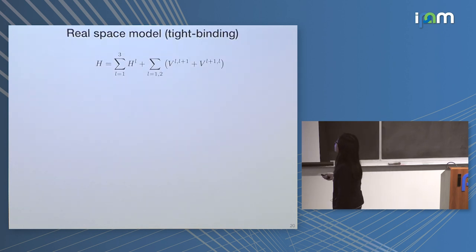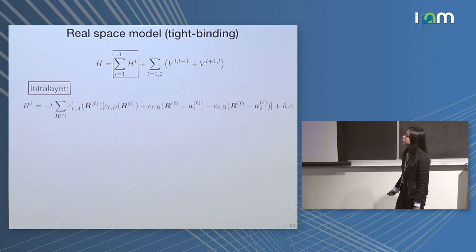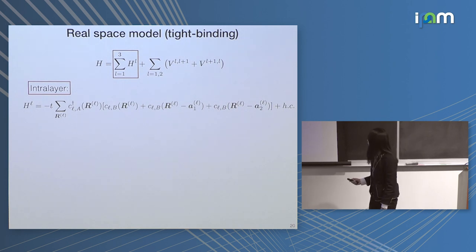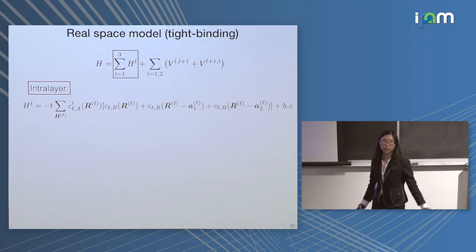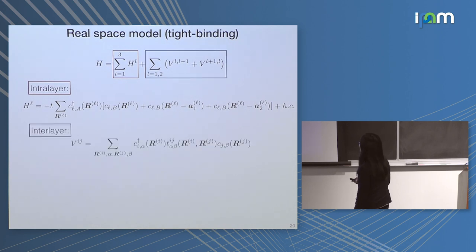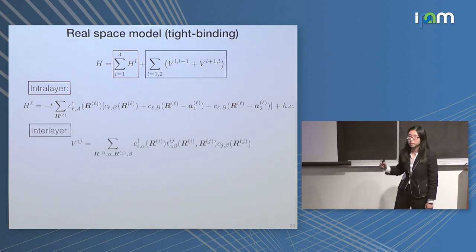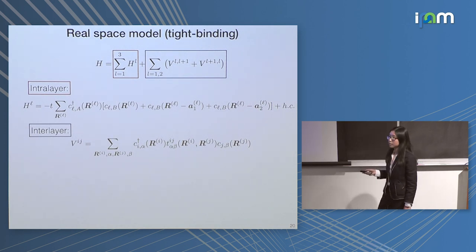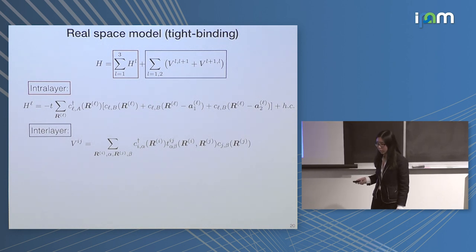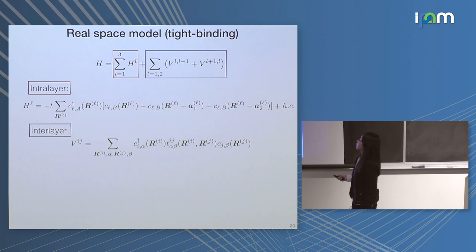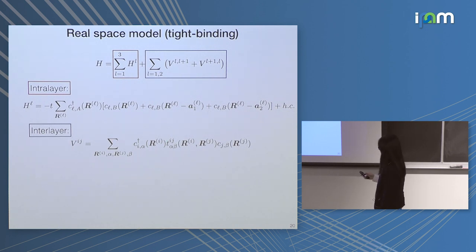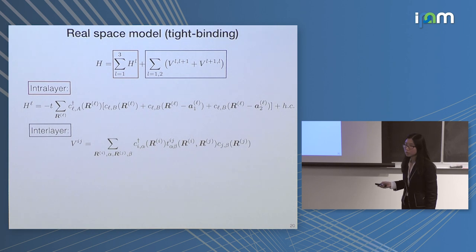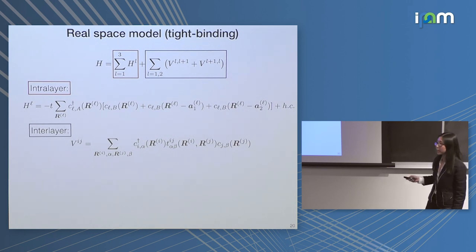We start from a real space tight-binding model. The first term is the intralayer hopping — for simplicity I'm writing down the nearest-neighbor hopping in the in-plane direction, but in principle we can have the full near-neighbor hoppings. The second term is the interlayer hopping, the coupling between adjacent layers. In this case I'm only considering hopping between adjacent layers, not between layer one and three. Through the T hopping term, you're connecting two different layers. In order to construct our model and cut it off in a smart way, we have to go to momentum space, so we do a plane wave expansion and write our original basis in terms of plane waves.